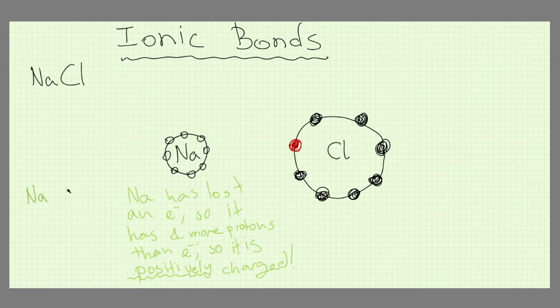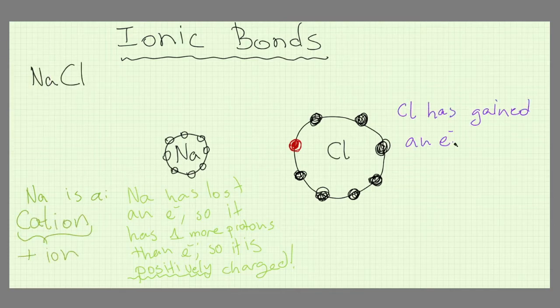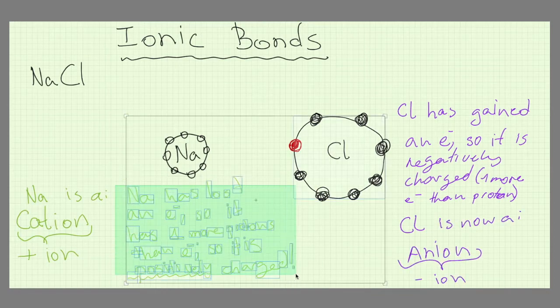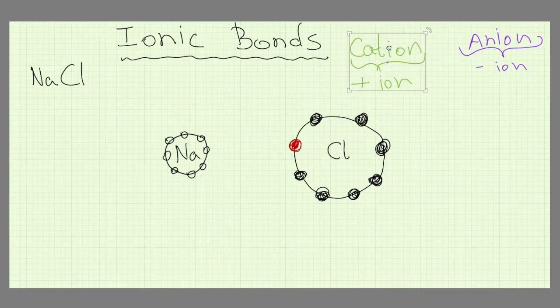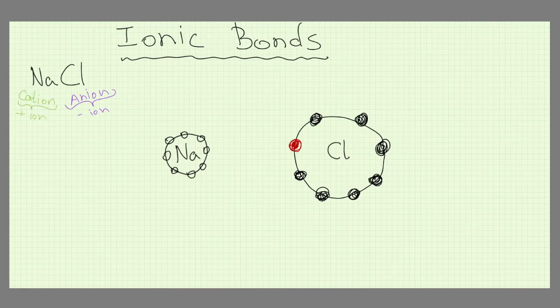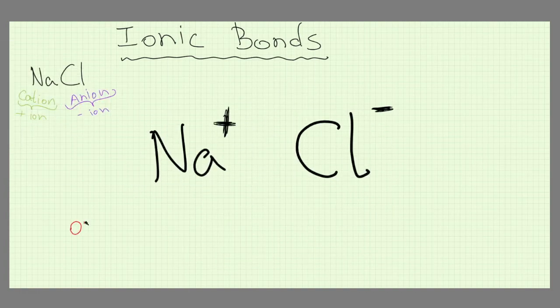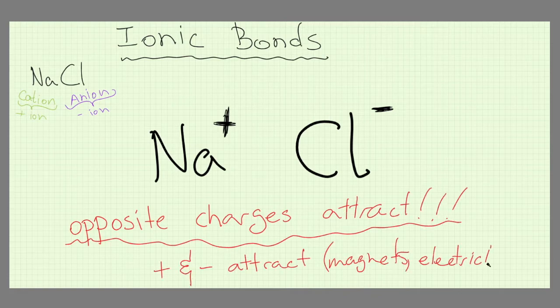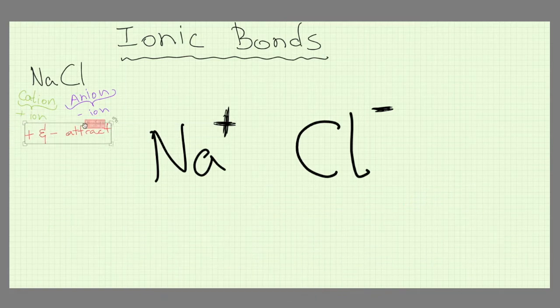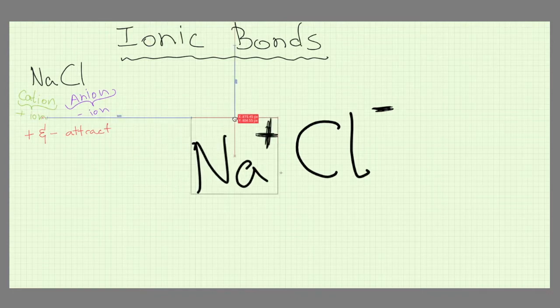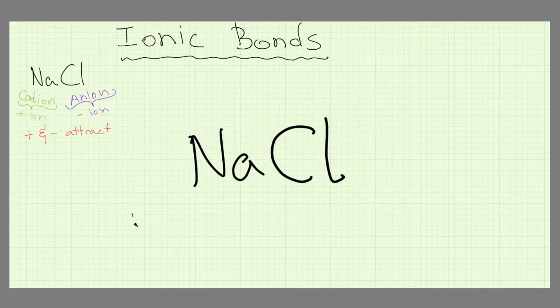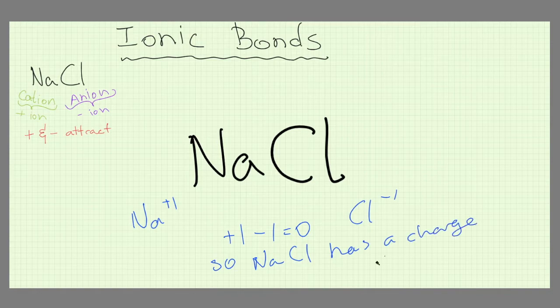Now since Na has lost an electron, it has more positive particles than negative ones on the inside so it is positively charged. It is what we call a cation. Cl has gained a negatively charged particle and is now negatively charged, what we refer to as an anion. Since opposite charges attract and these two atoms are oppositely charged, they will stay close together in what we call an ionic bond.